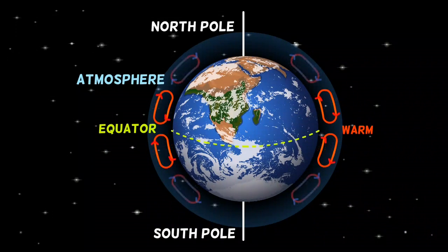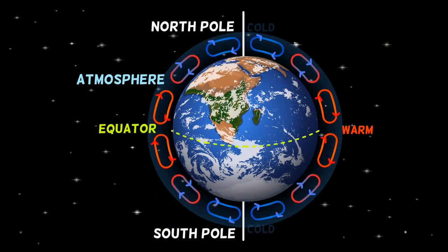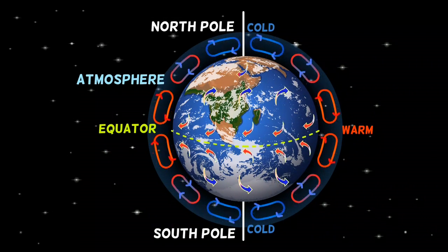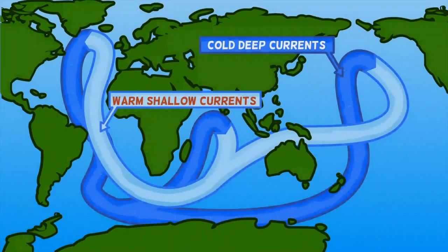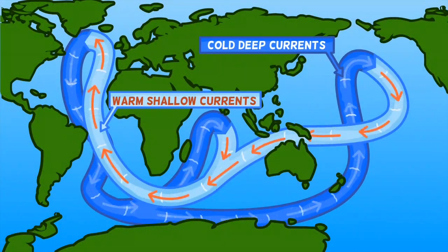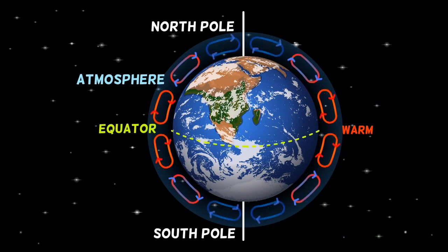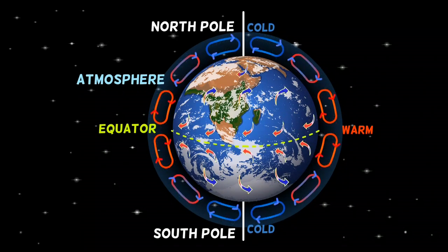This difference in warming caused by variations in the Sun's energy produces powerful air and water currents in the atmosphere and oceans that helps to circulate heat and regulates the overall average temperature on Earth. Through this process, the planet never gets massively too hot or too cold.